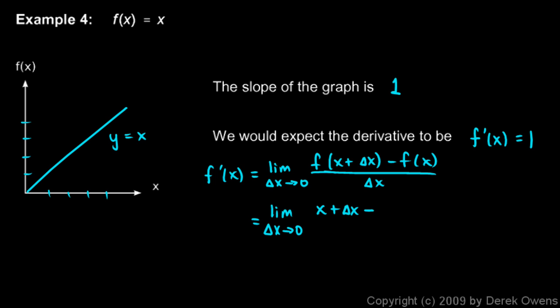And then minus f of x here, and f of x is just x, so minus x. And you can see this is really easy over delta x. These cancel out, the x and the minus x.